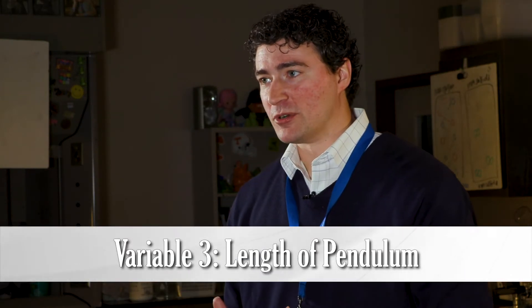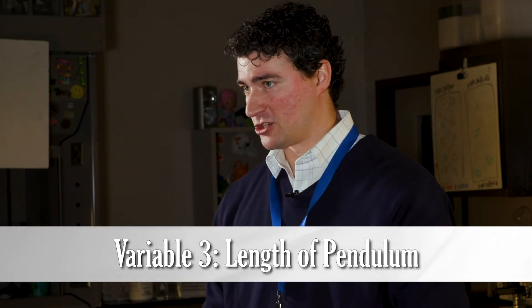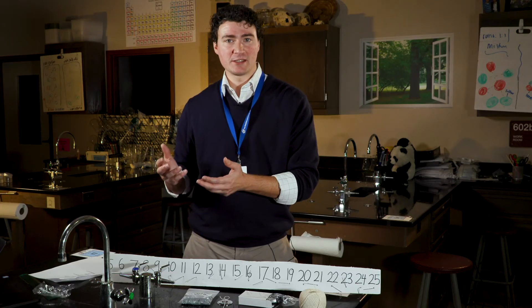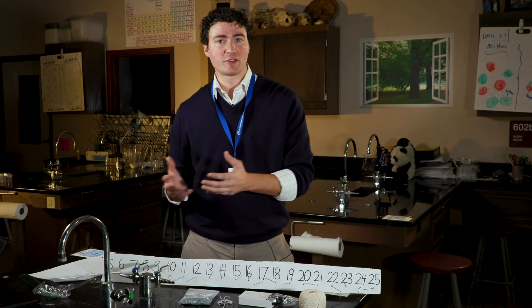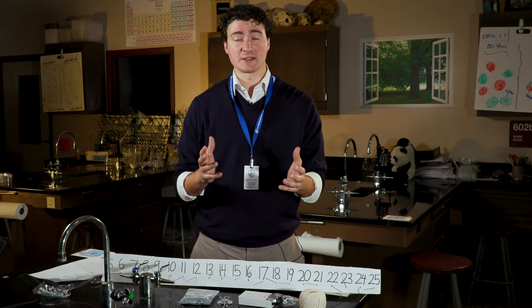The third variable is the length of the pendulum. For this test, student groups will receive a pendulum prepared at a different length, and predict, based on the length of the new pendulum, whether they think it will impact the number of complete cycles made in 15 seconds.